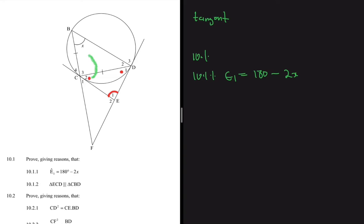If you look at C2, you will realize it equals angle B because of the tan-chord theorem. Angle C2 is between tangent CE and chord CD, and chord CD subtends angle x, so C2 equals x by the tan-chord theorem. At the same time, D1 also equals B because D1 is between tangent DE and chord CD, and chord CD subtends angle B which is x.